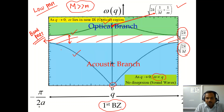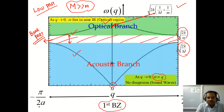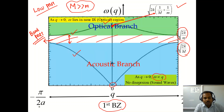This concludes the lattice dynamics module. We covered two examples — the monoatomic one-dimensional chain and the diatomic system. The monoatomic chain has no forbidden frequency region, while the diatomic system shows a splitting into optical and acoustic branches with a forbidden gap. From the next lecture we will discuss the electronic structure of solids, moving on from the free electron theory and crystal systems covered so far. Thank you.